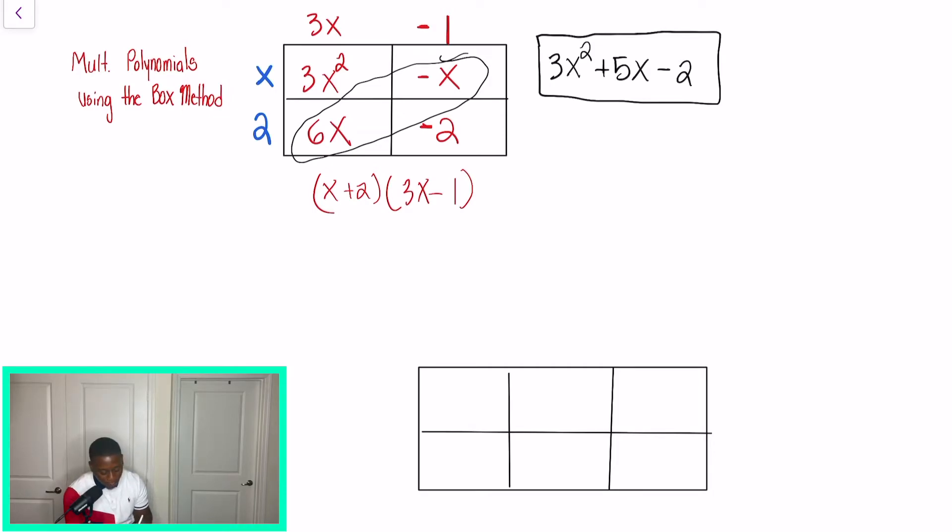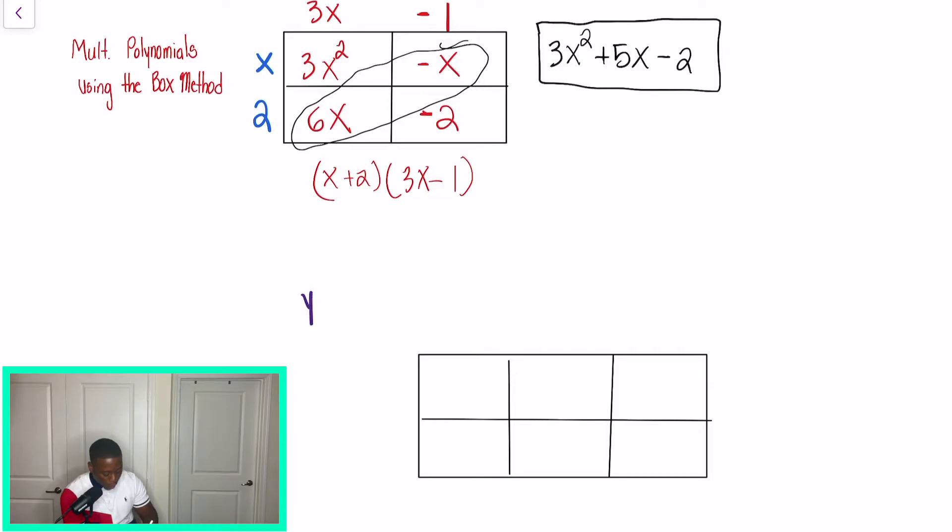Now in our next example, they want us to find the product of y plus 3 and y squared minus 2y plus 2. Now for some reason, sometimes when students use the box method, they get a little bit confused with how to line it up. And I want you guys to know that the same thing applies. So the way I drew my boxes was I have three boxes here, two on the side. Three by two. So what we're going to do is we're going to keep y squared negative 2y and 2 on top. And then to the left, we're going to put that y plus 3.